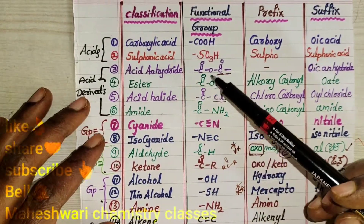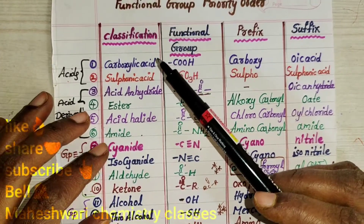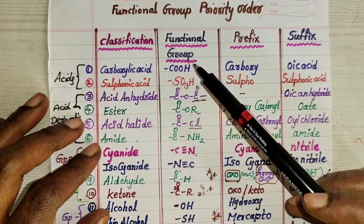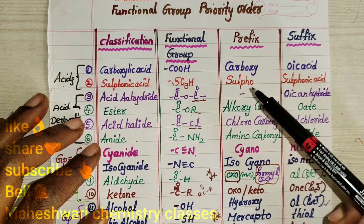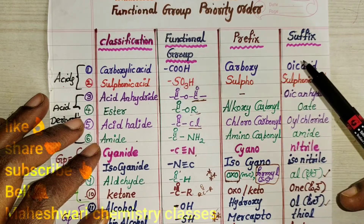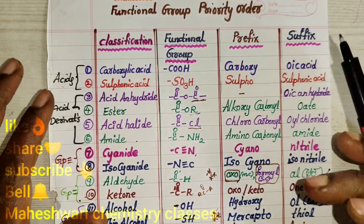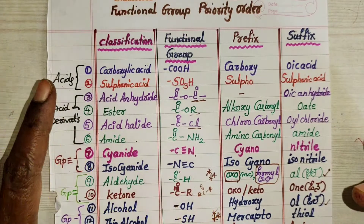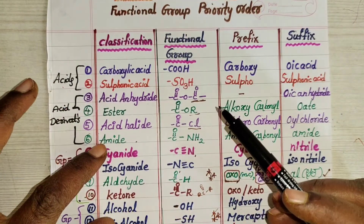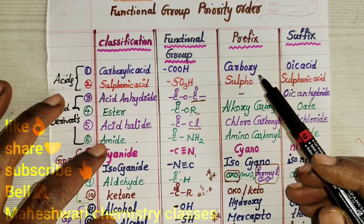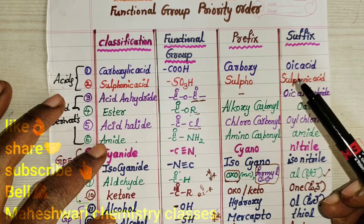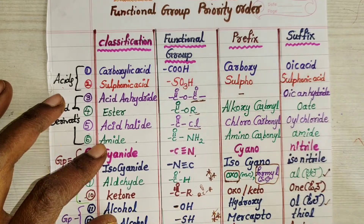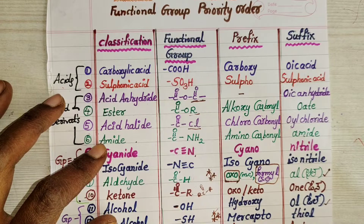Now for this purpose we have to learn the classification of functional groups. A functional group can have a prefix form and a suffix form. The first column is the prefix and the next column is the suffix.